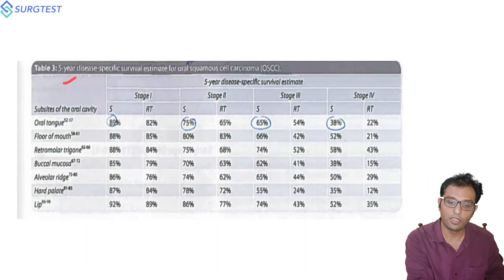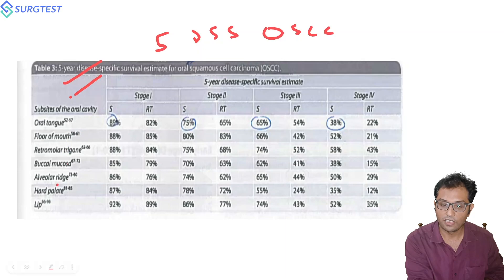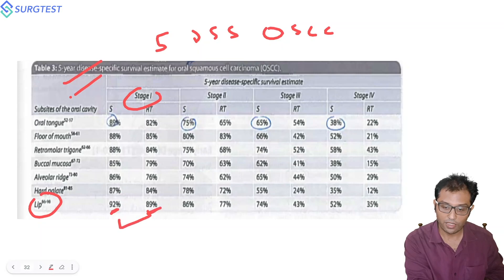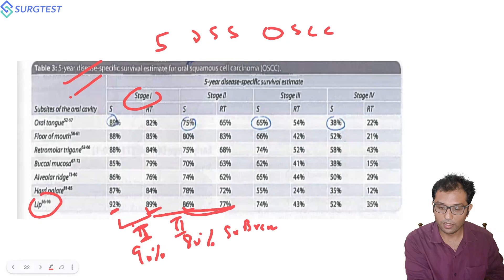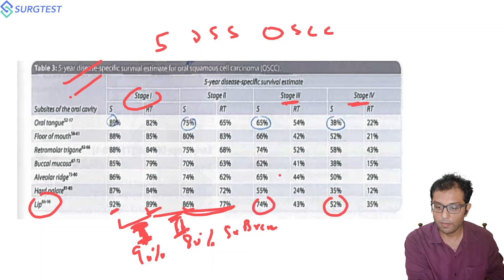Regarding the five-year disease-specific survival table for oral cavity carcinoma: for lip cancers, Stage 1 survival is 92 percent with surgery and 89 percent with radiotherapy — confirming that Stage 1 and Stage 2 can be treated with either modality, surgery or brachytherapy, with approximately equal outcomes. For Stage 3 and Stage 4, survival drops to 50 to 60 percent, and surgery is much better than radiation. Therefore, the better modality for Stage 3 and Stage 4 is surgery, not radiation.